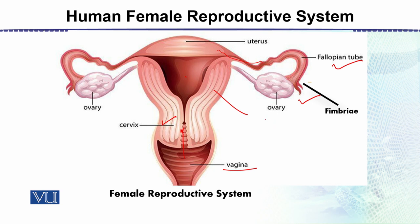There is another structure called the ovary. The ovaries are almond-sized, oblong, oval-shaped structures present in the lower abdomen, one on each side of the uterus. These are the main structures of the Female Reproductive System.